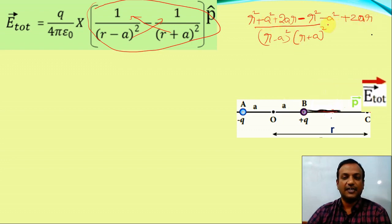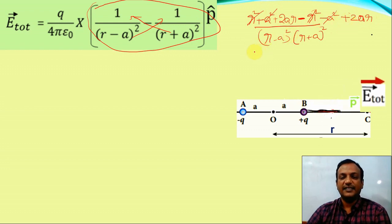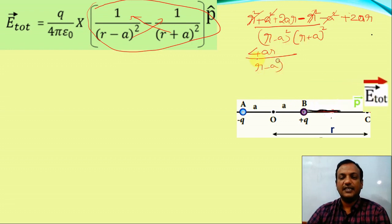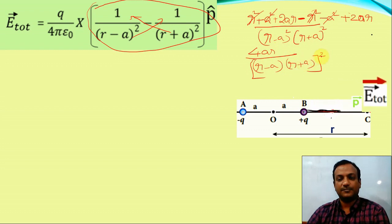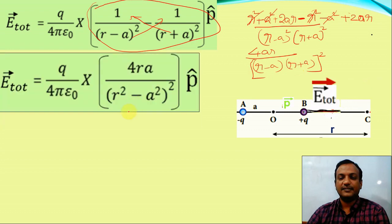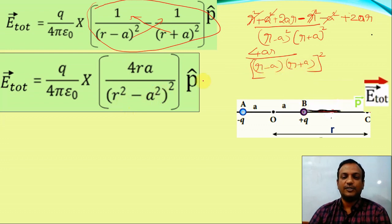After simplification, the numerator becomes 4ar and the denominator becomes (r minus a) whole square times (r plus a) whole square, which equals (r² minus a²) whole square. Using the identity (r plus a)(r minus a) = r² minus a², we arrive at 4ar divided by (r² minus a²)².